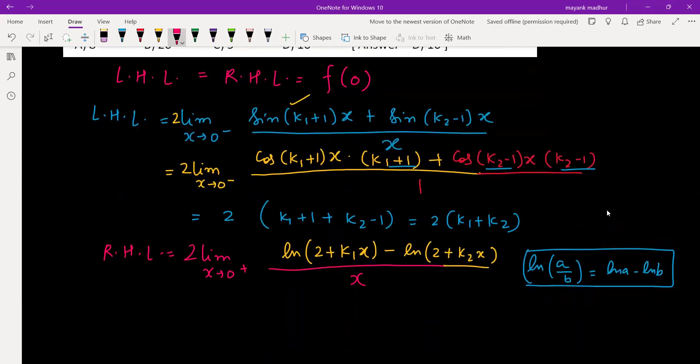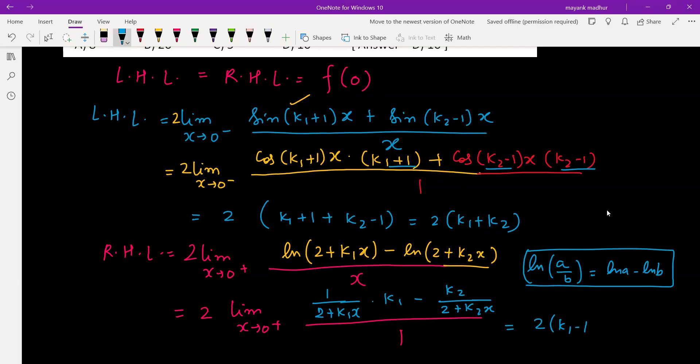Now again use L'Hôpital's rule, differentiate numerator and denominator. For numerator, differentiation is 1/(2+k₁x) and using chain rule k₁ will come. Similarly here also, k₂/(2+k₂x). And the moment you plug the value of x = 0, you get it as 2(k₁-k₂).